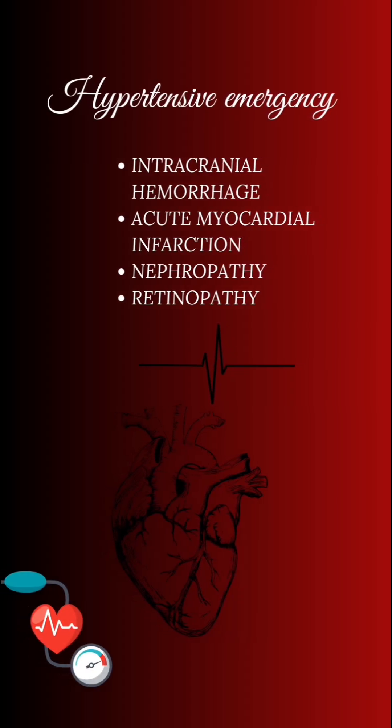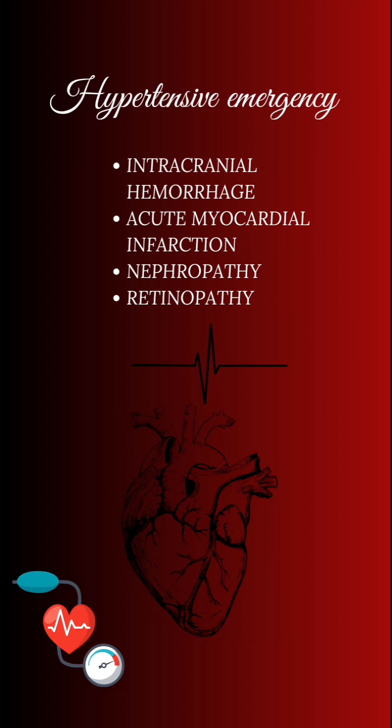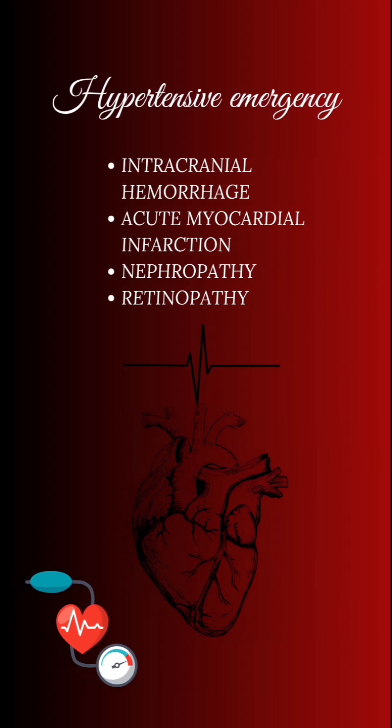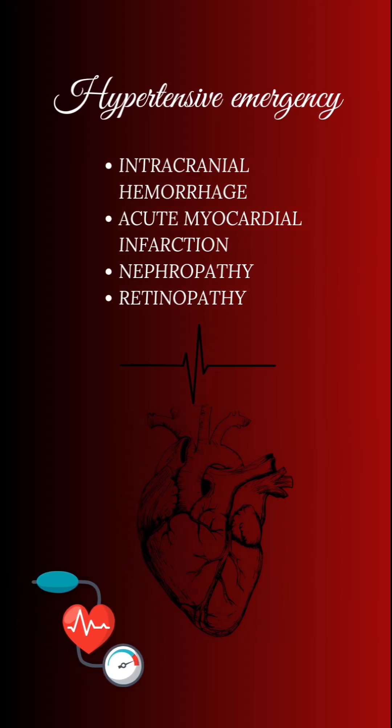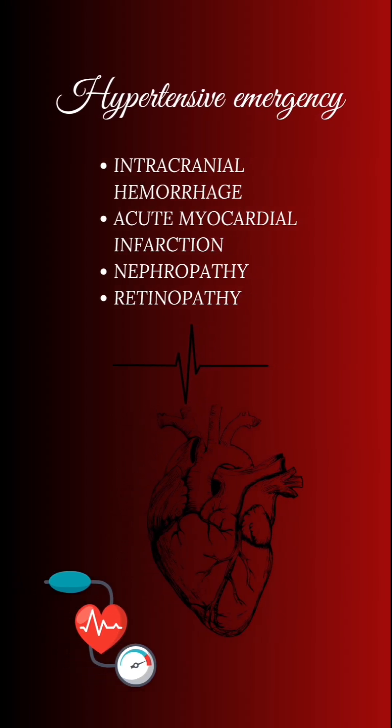Examples of end organ damage include intracranial hemorrhage, stroke, hypertensive encephalopathy, acute myocardial infarction, nephropathy, and retinopathy.